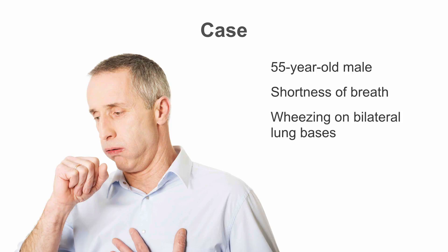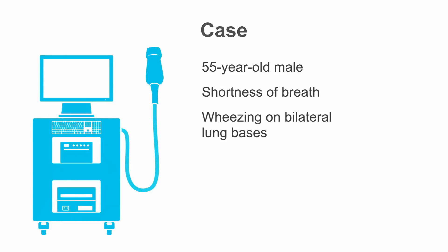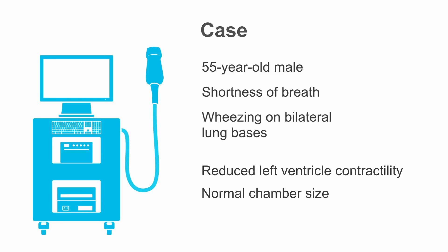So what are you going to do now? You really quite don't have a good understanding of what his pathological process is yet. What if I could offer some additional information — what if you could actually assess his cardiac function at this point? Would that be helpful? Probably, right? So let's say you know how to perform an echo, and you go ahead and do a point-of-care echo at the bedside. You find out that he's got some reduced left ventricular contractility, normal chamber sizes, and no pericardial effusion.